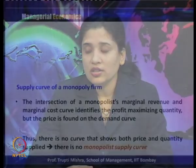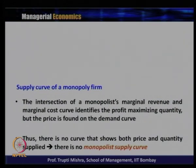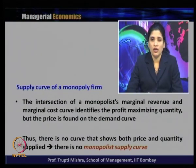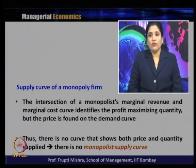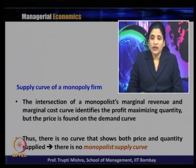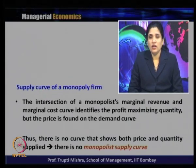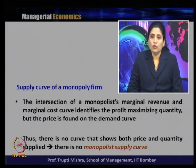The situation is different in case of a monopoly firm. The intersection of the monopolist's marginal revenue and marginal cost curve identifies the profit-maximizing quantity, and the price is found on the demand curve. Following the MC=MR rule gives us the profit-maximizing output and price. Since price is generally found on the demand curve, there is no single curve that shows both price and quantity supplied — there is no monopolist supply curve.